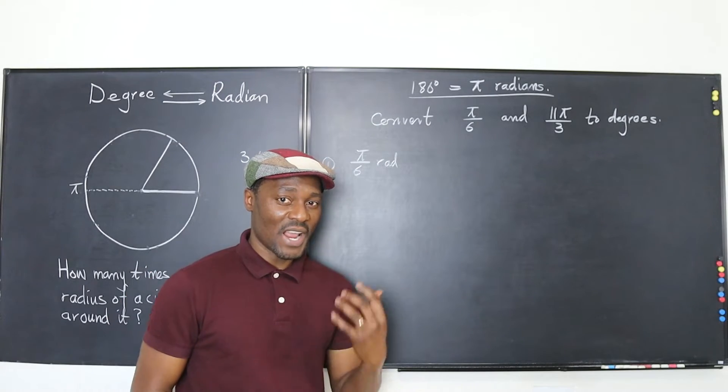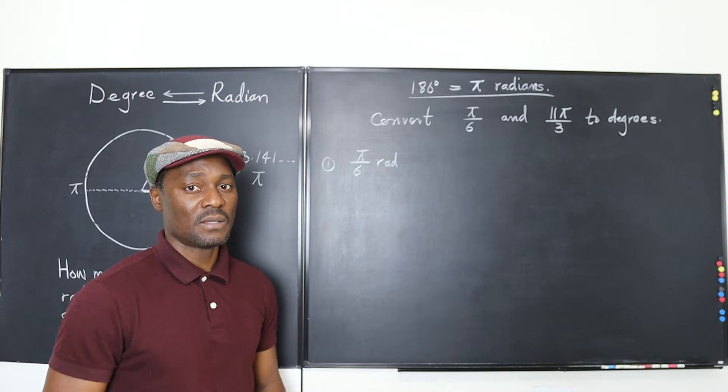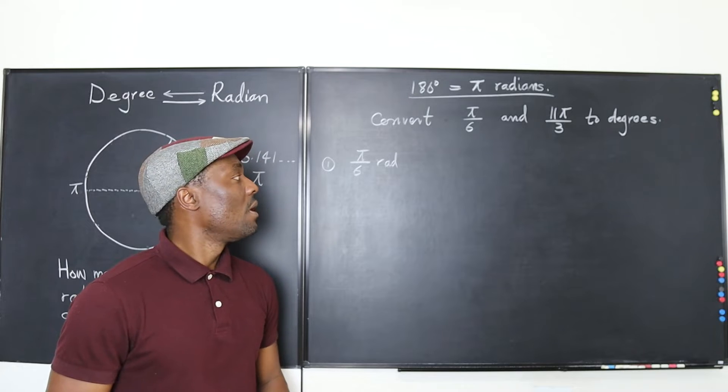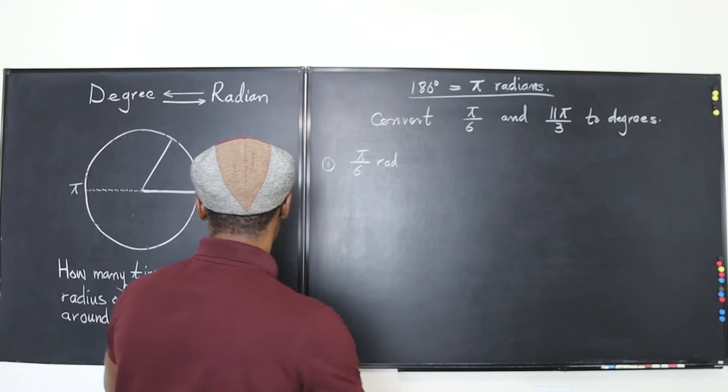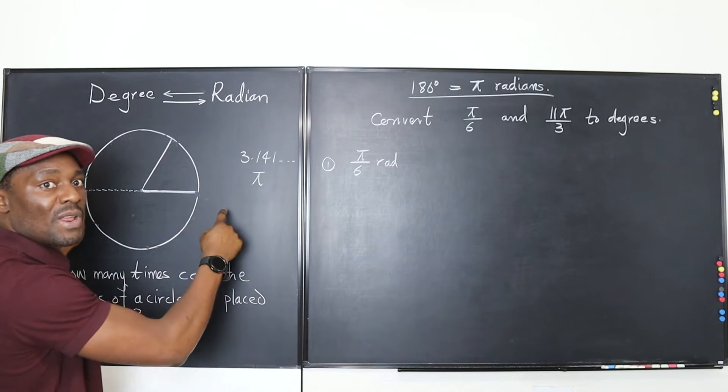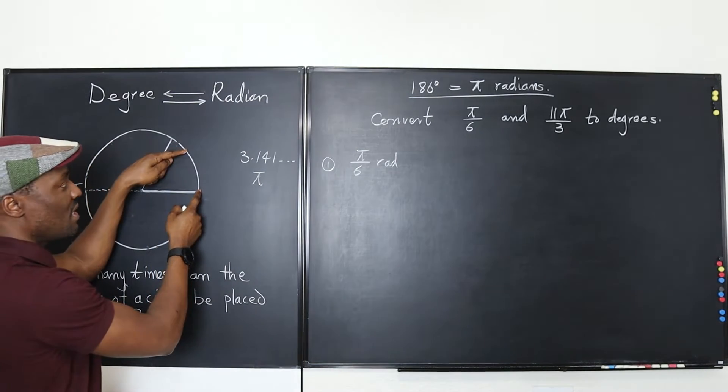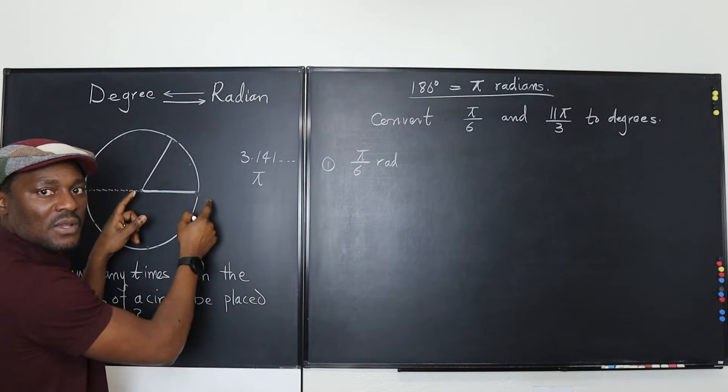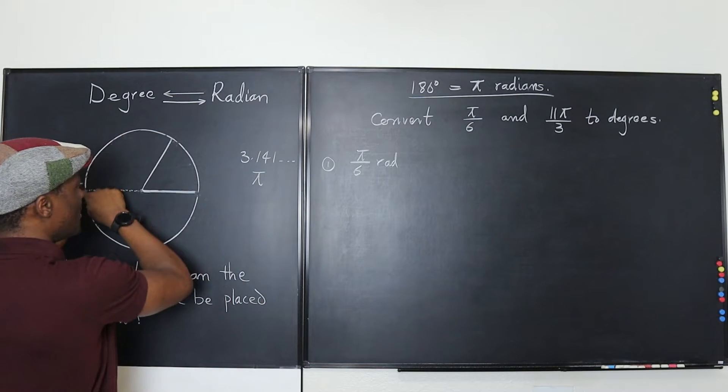So the first question I have is pi over 6 radians. We want to convert that into degrees. You can imagine that if it's pi over 6, remember if you go from here to here is pi. If you have to divide this whole trip into 6, your angle must be somewhere here like a small angle. That's what you're dealing with. So just know that the whole thing from here to here is pi. The whole thing is 2 pi.